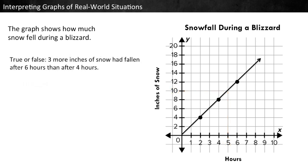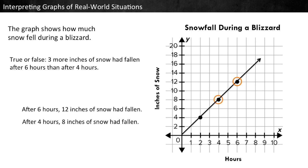True or false: 3 more inches of snow had fallen after 6 hours than after 4 hours. After 6 hours, 12 inches of snow had fallen. After 4 hours, 8 inches of snow had fallen. 12 is 4 more than 8, not 3 more. So this statement is false.